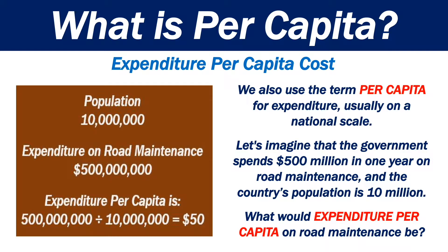We also use the term per capita for expenditure, usually on a national scale. Let's imagine that the government spends $500 million in one year on road maintenance, and the country's population is 10 million. What would expenditure per capita on road maintenance be? The expenditure per capita is $50. We get this value by dividing the total expenditure on road maintenance by the country's population.